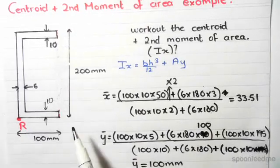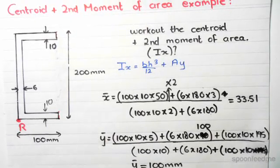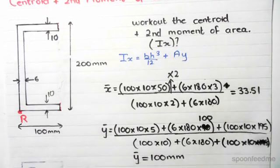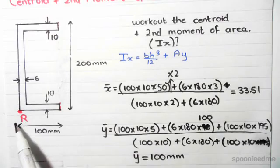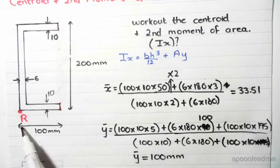For X bar we have to do the sum of areas times the horizontal distance of the center of an element from our reference point. Our reference point is at the bottom left corner R.